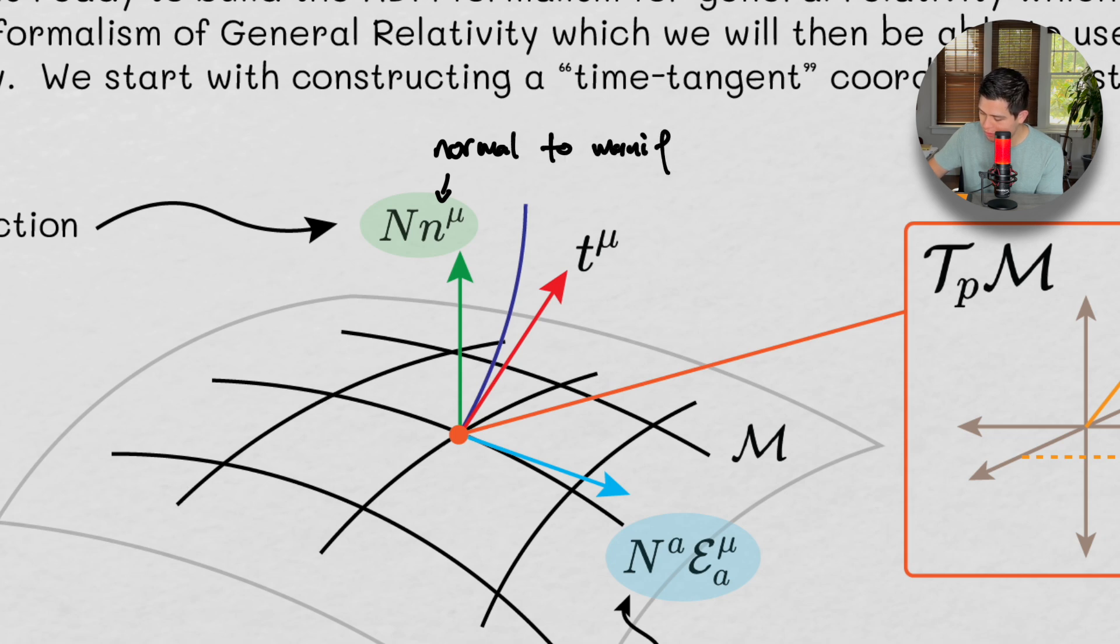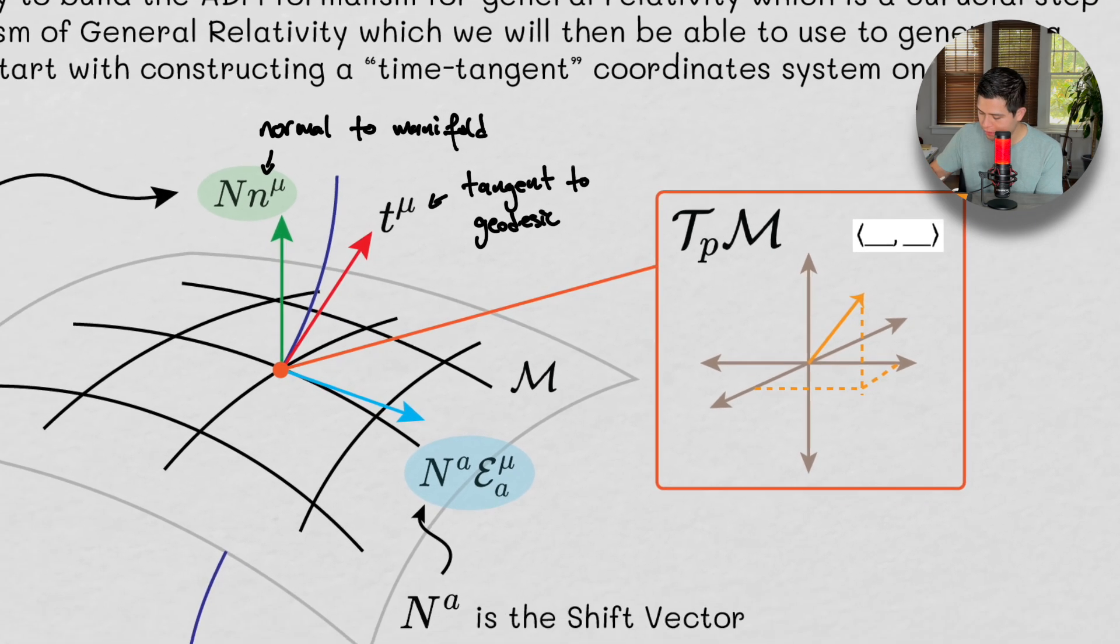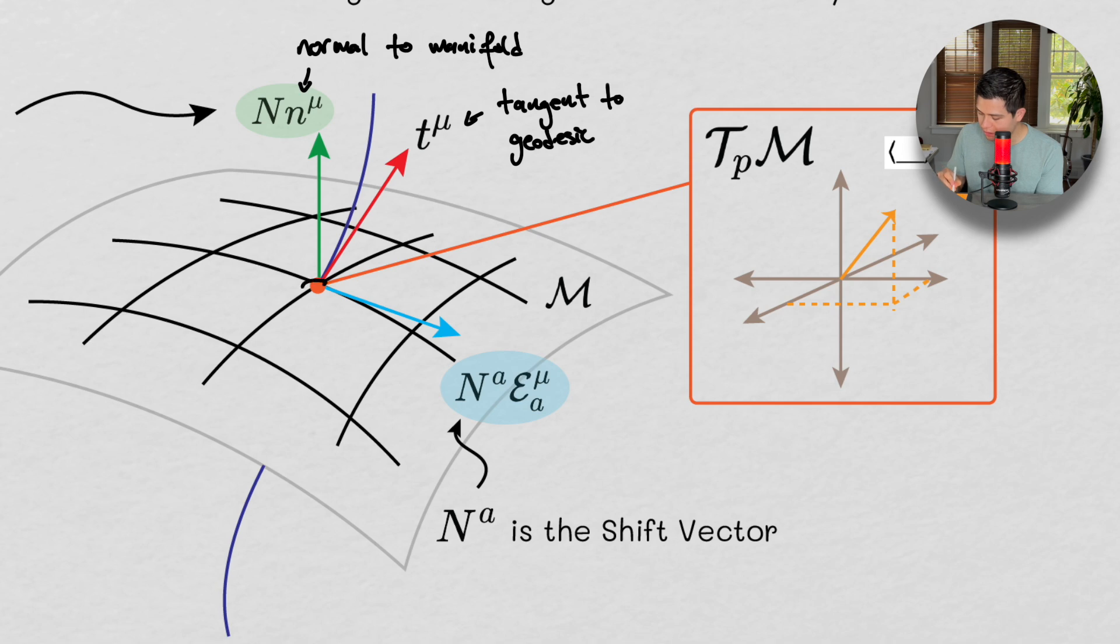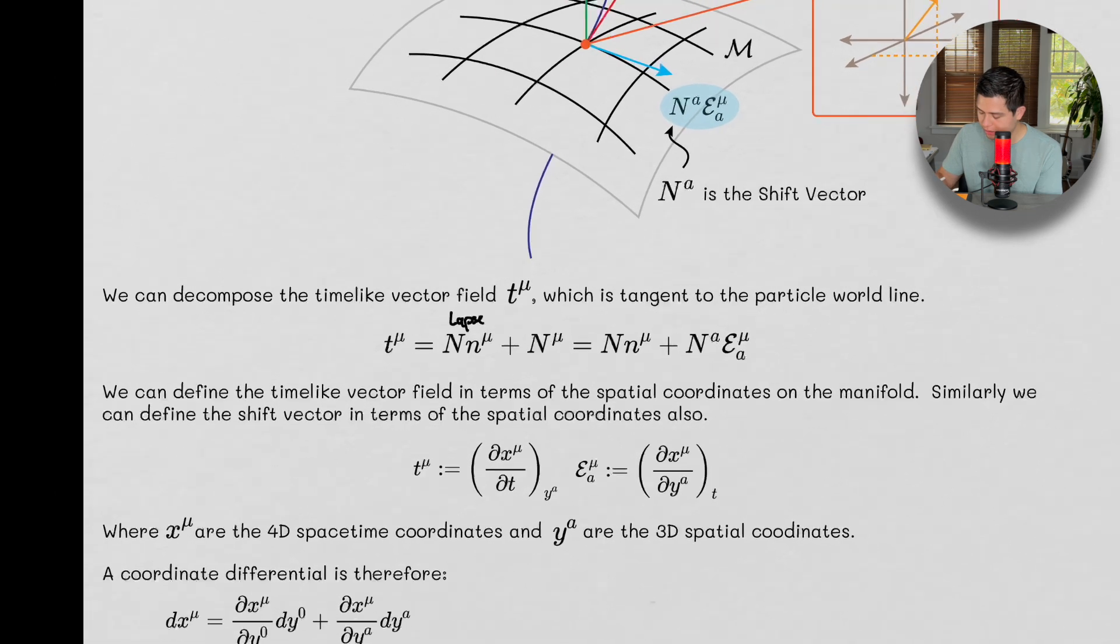So this one's tangent to the manifold. Oh no, to geodesic. Right, to the geodesic. And this thing is going to be tangent to the manifold. Alright, so this is tangent to the manifold. And without cluttering, I'll just keep it at that for right now.